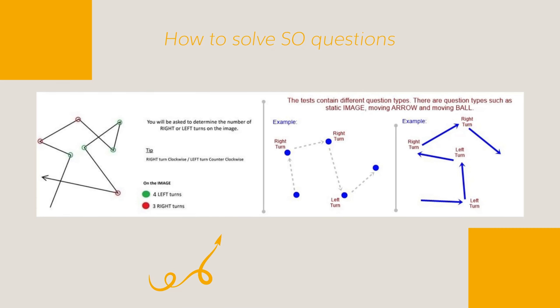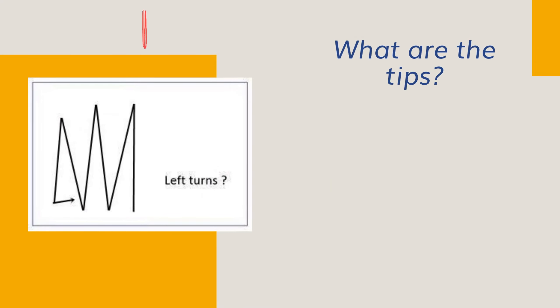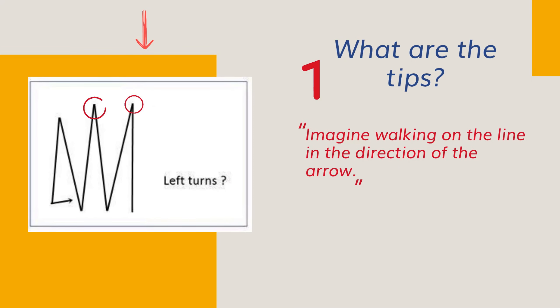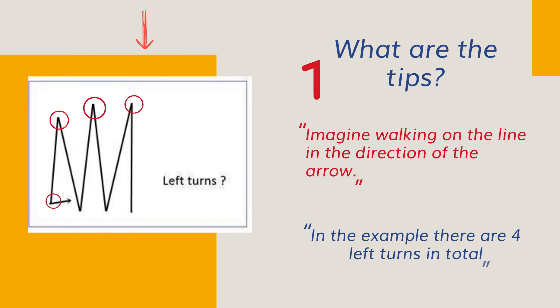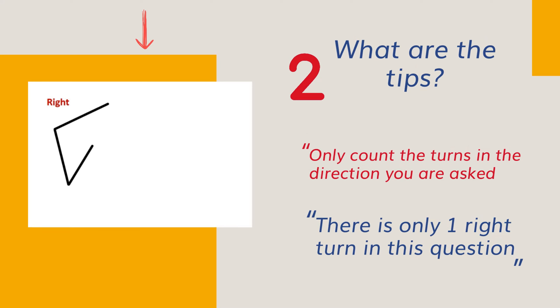You will be asked the number of right or left turns. Imagine walking on the line in the direction of the arrow. Only count the turns in the direction you are asked.